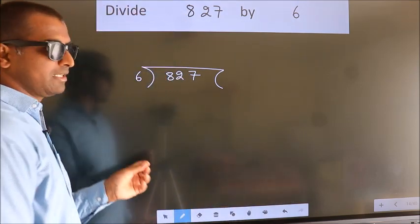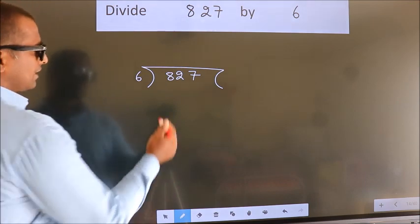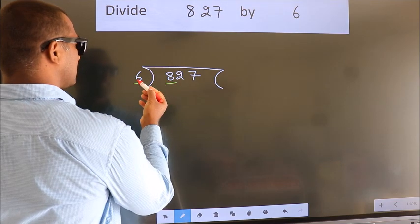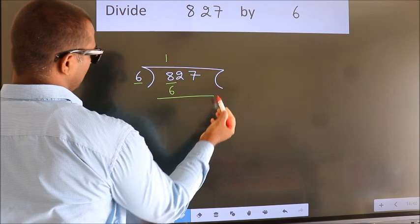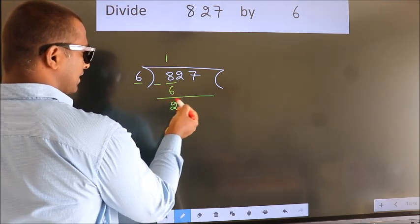This is step 1. Next, here we have 8, here 6. A number close to 8 in the 6 table is 6 once, which is 6. Now we should subtract. We get 2.